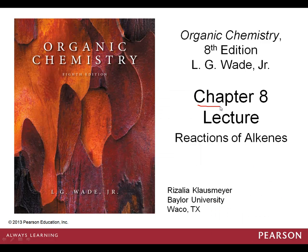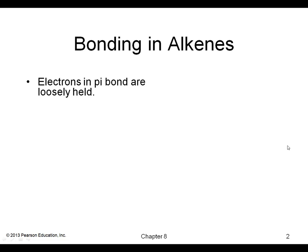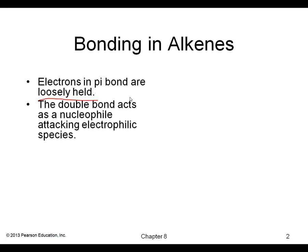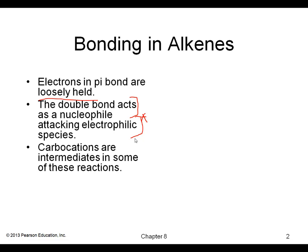Let's begin Chapter 8 of Wade. This will be a very heavy chapter as we're going to be looking at the reactions of alkenes. As a review of the bonding of alkenes, remember we have a pi bond. One of the key things about pi electrons is that they are very loosely held, so they can act as a free lone pair, as a base, or as a nucleophile — and those pi electrons attack electrophilic species.